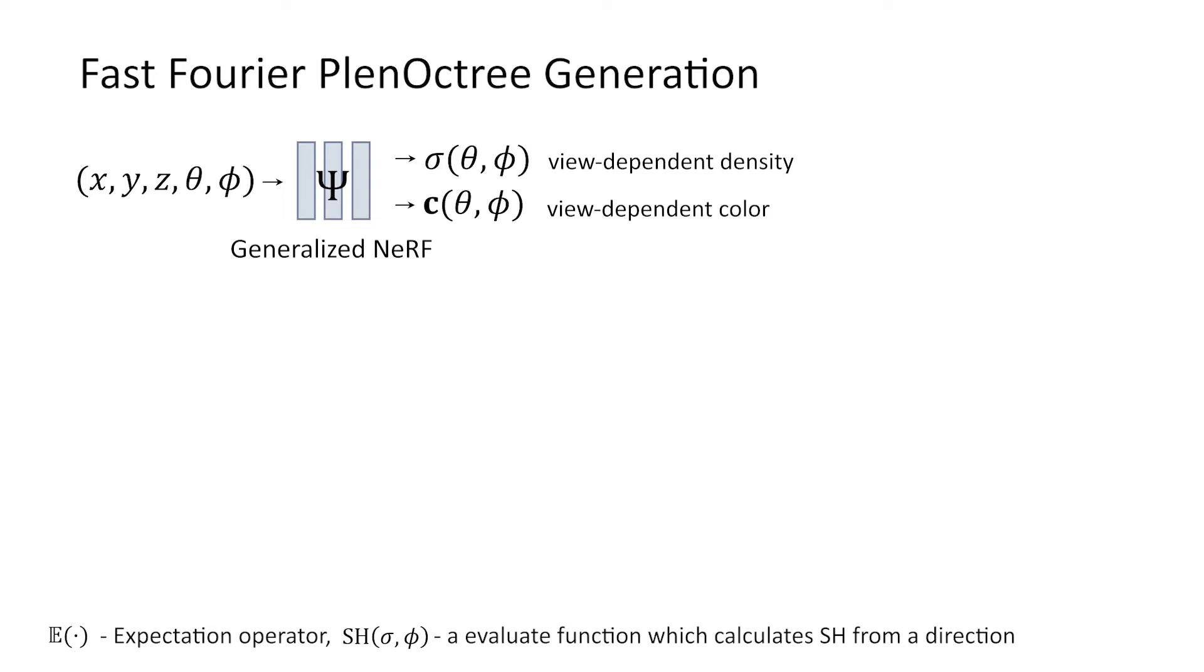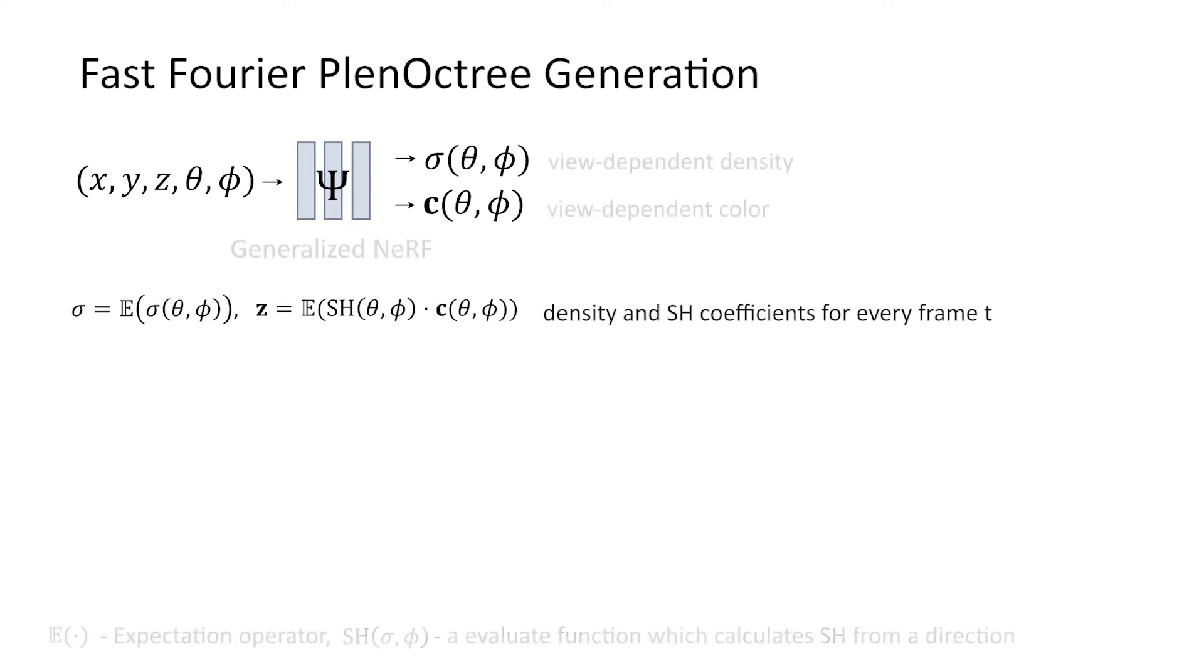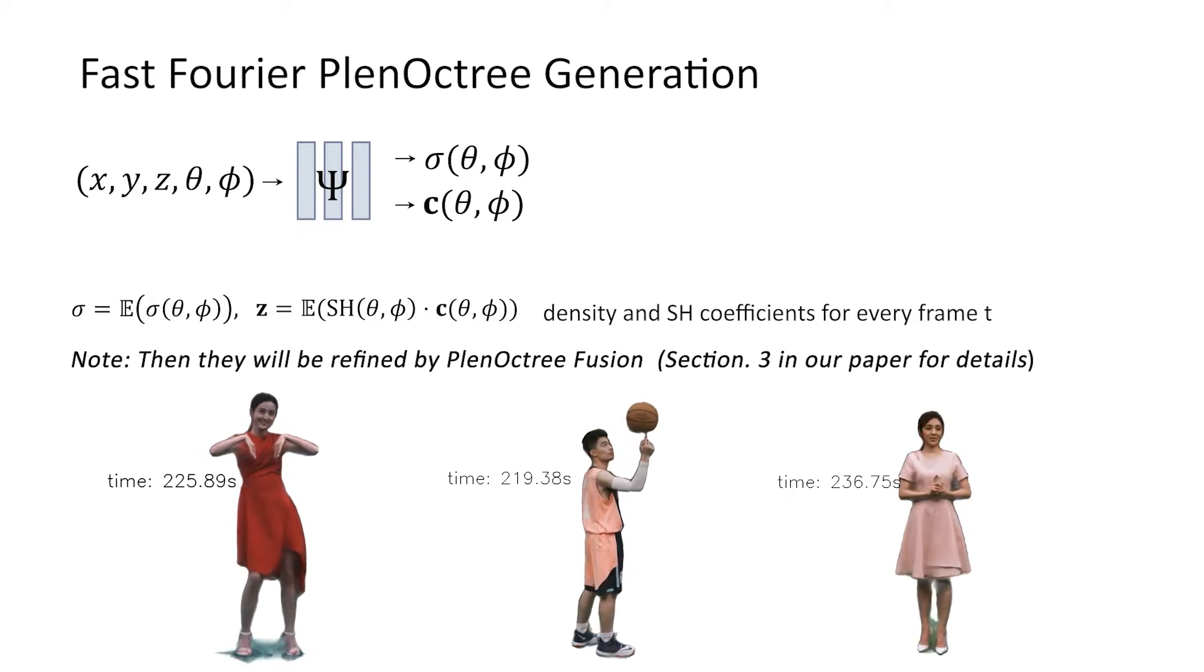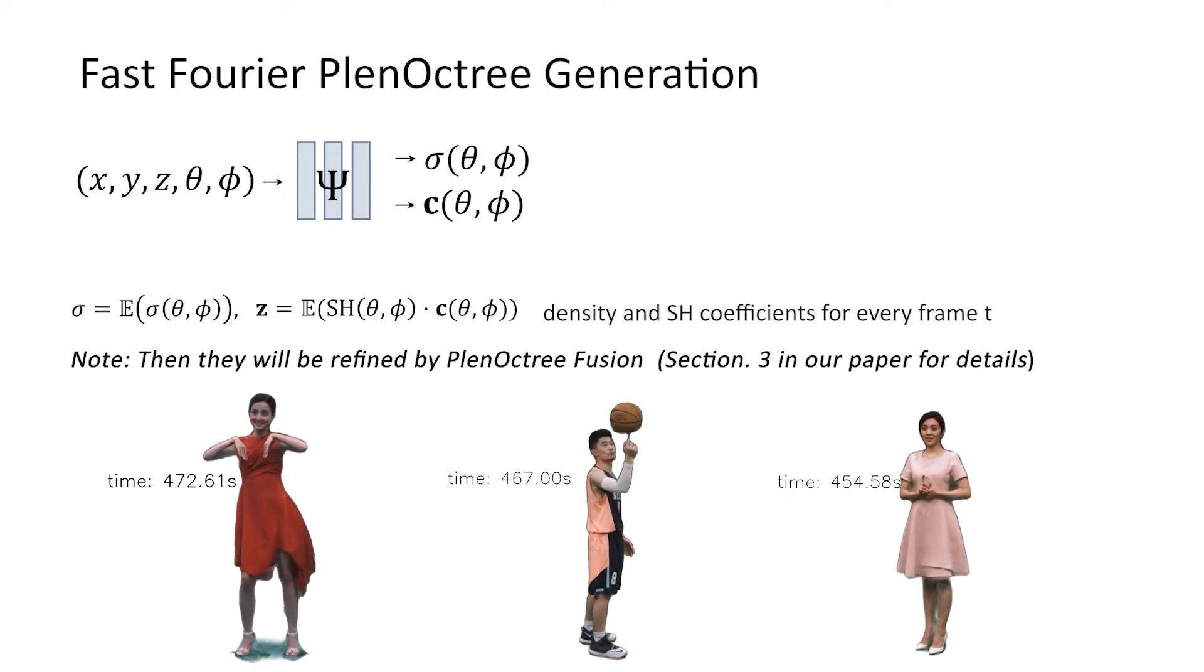Generalized NeRF can predict view-dependent density and color for each 3D point with viewing direction at each timestamp. We can convert them to view-independent density and SH coefficients by calculating expectations in different directions. Then they will be refined by Plenochtree fusion.